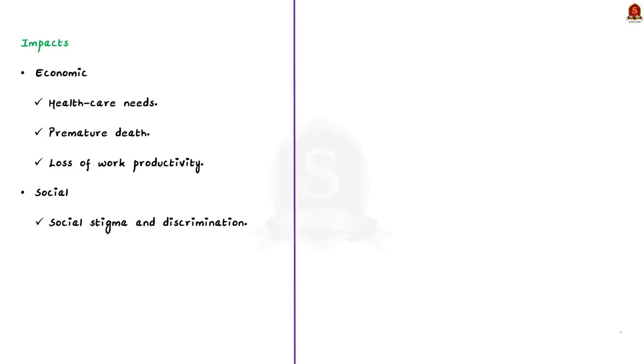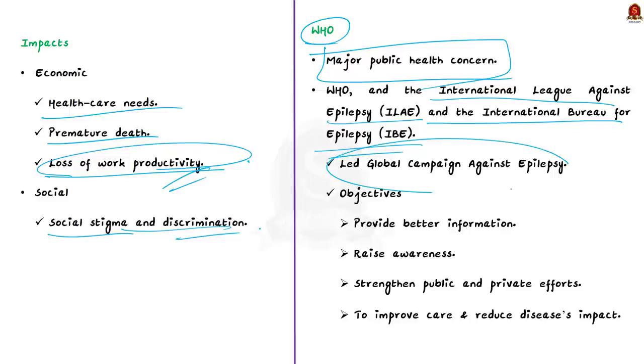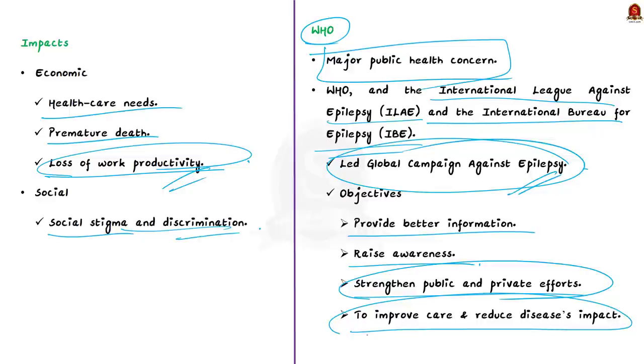Epilepsy has significant economic implications in terms of healthcare needs, premature death, and lost work productivity. Although social effects vary from country to country, the stigma and discrimination that surround epilepsy worldwide are often more difficult to overcome than the seizures themselves. People living with epilepsy can be targets of prejudice. The stigma can discourage people from seeking treatment. World Health Organization and its partners recognize epilepsy as a major public health concern. WHO, the International League Against Epilepsy, and the International Bureau of Epilepsy led the global campaign to bring the disease out of the shadows, to provide better information, raise awareness, and strengthen efforts to improve care and reduce disease impact.